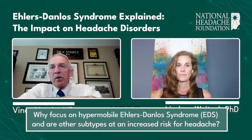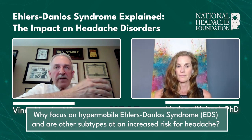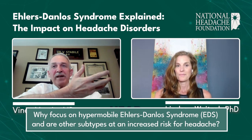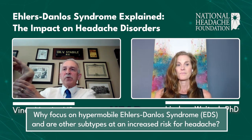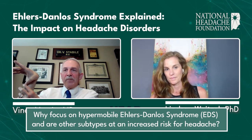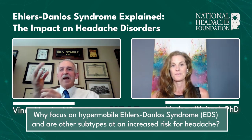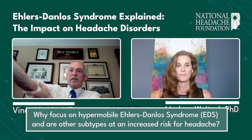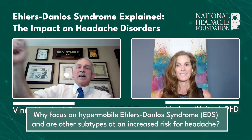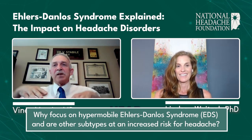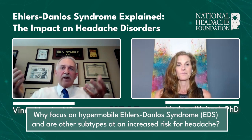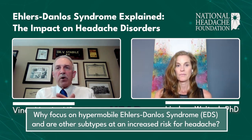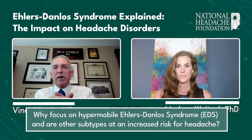EDS causes people to become very hyperflexible. There are criteria called the Beighton criteria. Basically, you bend your hand forward and see if you can touch your thumb to your forearm—like forming a swan with your hand. Then you take your fifth finger and see if you can hyperextend it more than 90 degrees. You bend your arm back to see if it goes more than about 190 degrees, and you do the same thing with the knees. Finally, with knees straight, you see if they can palm the floor. Each side gets one point, so there are nine points total. Depending on age, scoring between four and six criteria meets the threshold for hypermobility.